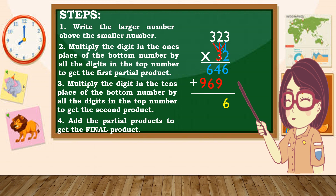4 plus 9 is 13 — bring down 3, carry 1. 1 plus 6 is 7, plus 6 is 13 — bring down 3, carry 1. 1 plus 9 is 10. Therefore 10,336 is our final product. Napakasimple at napakadali, diba?